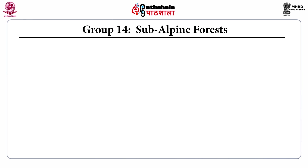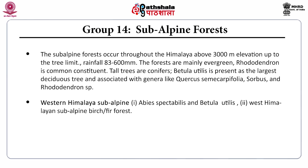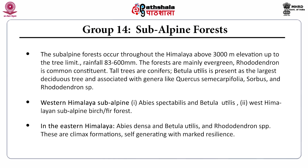Group 14, the subalpine forests, occur throughout the Himalaya above 3000 meters elevation up to the tree limit. Rainfall is low and the forests are mainly evergreen. Rhododendron is a common constituent and tall trees are conifers. Betula utilis is present as the largest deciduous tree, associated with Quercus semicarpifolia, Sorbus, and Rhododendron species. Western Himalayan subalpine forests feature Abies spectabilis and Betula utilis. In the Eastern Himalaya, Abies densa, Betula utilis, and Rhododendron species are present. These are climax formations, self-generating with marked resilience.